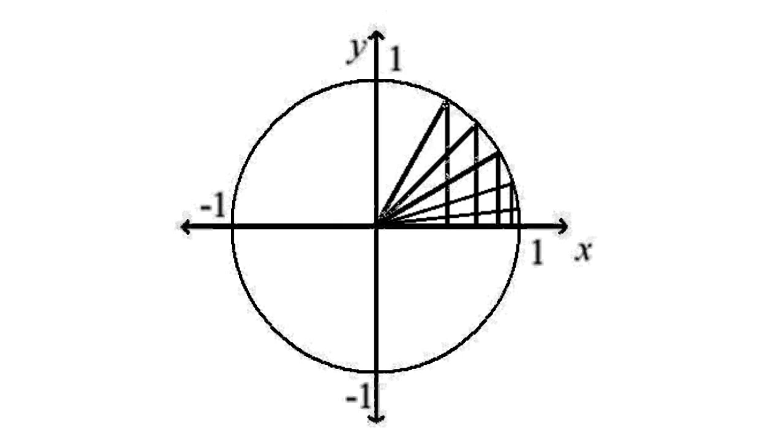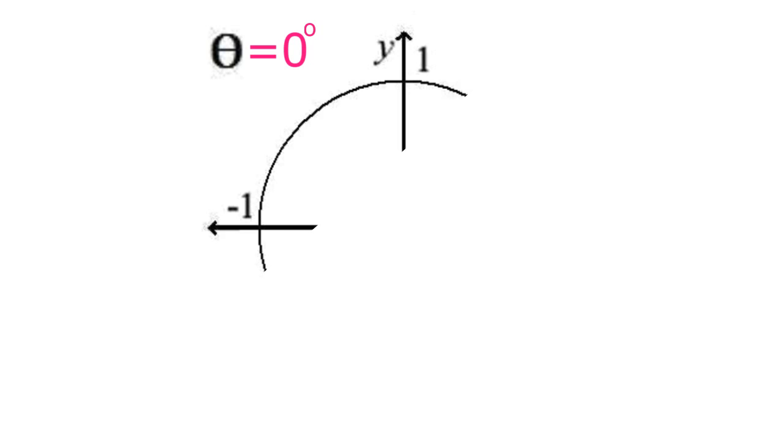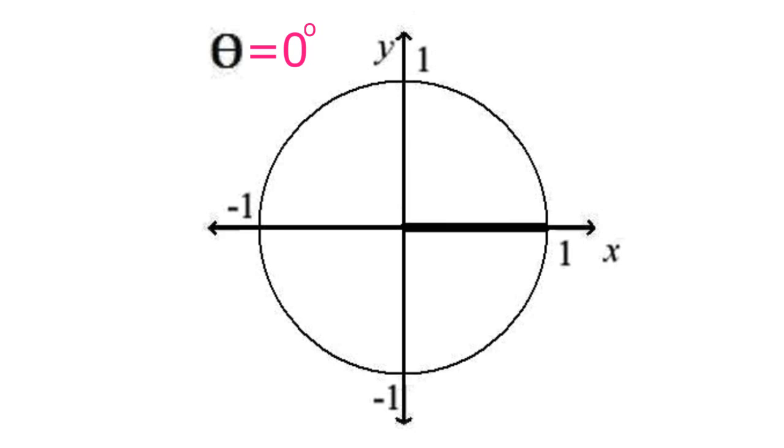From here, it is only a small abstraction to consider what a hypothetical triangle with an angle theta equal to 0 might look like. If such a thing were possible, its opposite side would have a length of 0, and its adjacent side would have a length of 1.